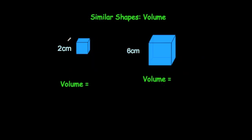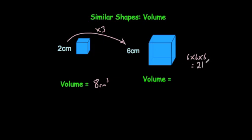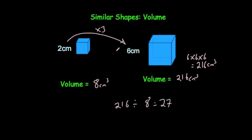What happens whenever we use a scale factor of enlargement of three — whenever the cube is three times bigger? The volume for the smaller one is again eight centimeters cubed, but for the larger one it's going to be six times six times six, which is equal to 216 centimeters cubed. When we do 216 divided by eight we get 27. So if we enlarge the sides by a scale factor of three, the volumes get 27 times bigger.